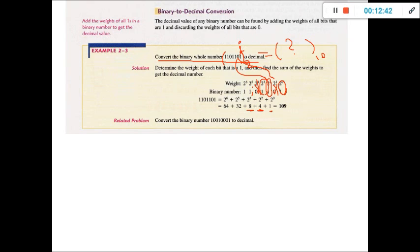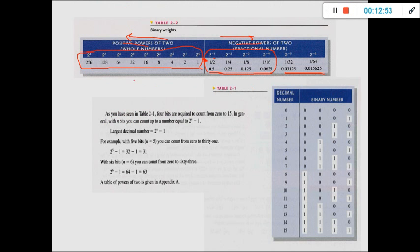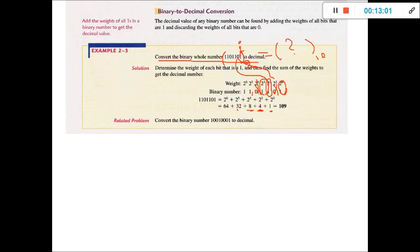You should know the values of 2 to the power of 5, 2 to the power of 6, and 2 to the power of 7, because in the exam you are not allowed to use a calculator. 2 to the power of 5 is 32, 2 to the power of 6 is 64. Finding the summation, the result is 109 in decimal. So this binary number is equal to 109 in decimal.